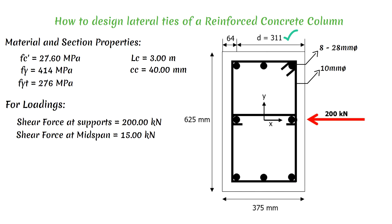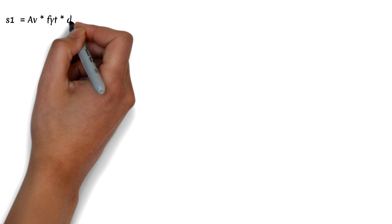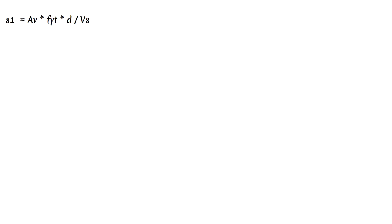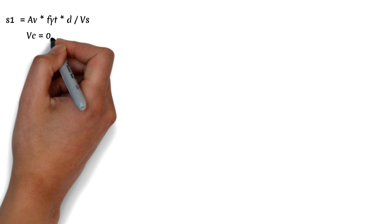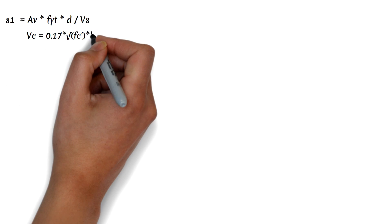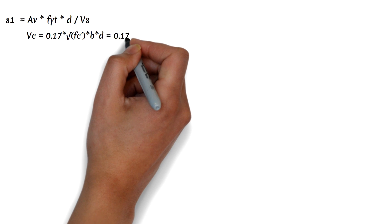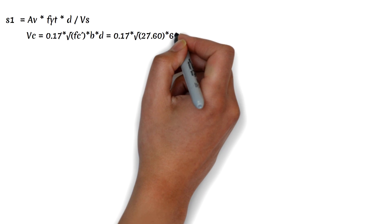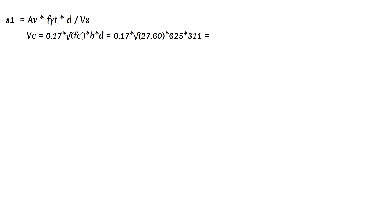Take note that we will be using the provisions under the special moment-resisting frames. First, let us calculate the spacing considering the actual shear force VU. The formula is: S equals area of shear reinforcement times shear reinforcement yield strength times effective depth, divided by steel shear strength Vs. We first calculate the concrete shear strength Vc, which equals 0.17 times the square root of FC' times width B times effective depth d, giving us 174 kN.